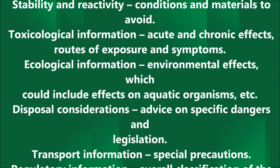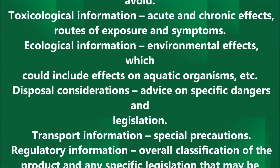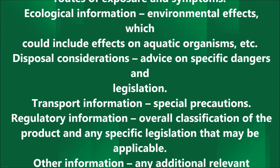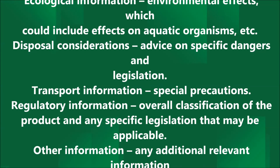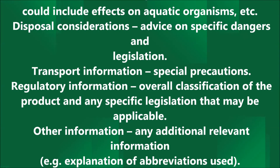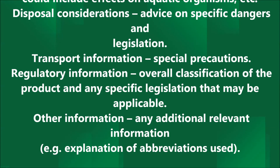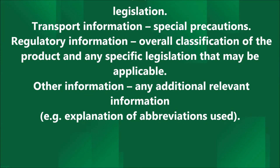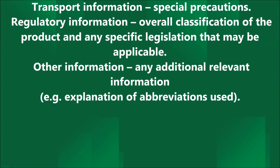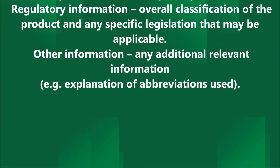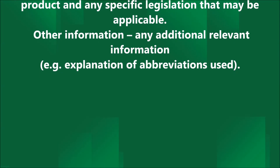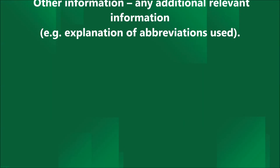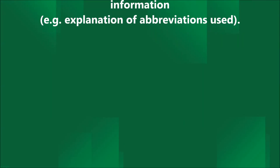Section 11: Toxicological information — acute and chronic effects, routes of exposure and symptoms. Section 12: Ecological information — environmental effects, which could include effects on aquatic organisms, etc. Section 13: Disposal considerations — advice on specific dangers and legislation. Section 14: Transport information — special precautions. Section 15: Regulatory information — overall classification of the product and any specific legislation that may be applicable. Section 16: Other information — any additional relevant information, for example explanation of abbreviations used.